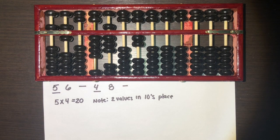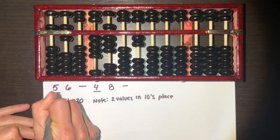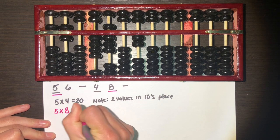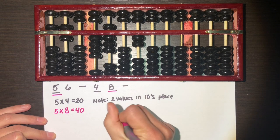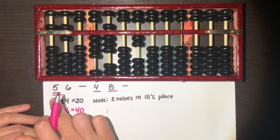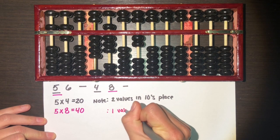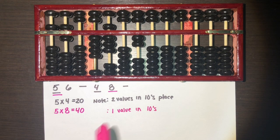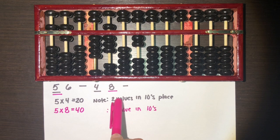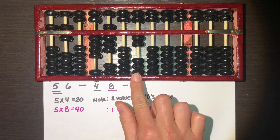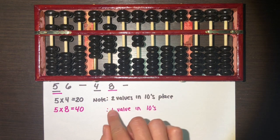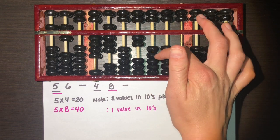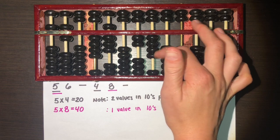Next, we multiply the tens digit of the first number by the ones digit of the second: five times eight equals 40. We note that now we have one value in the tens place. Since the difference between this and our original starting position is one, we scoot one to the right and place 40 there — four tens and zero.